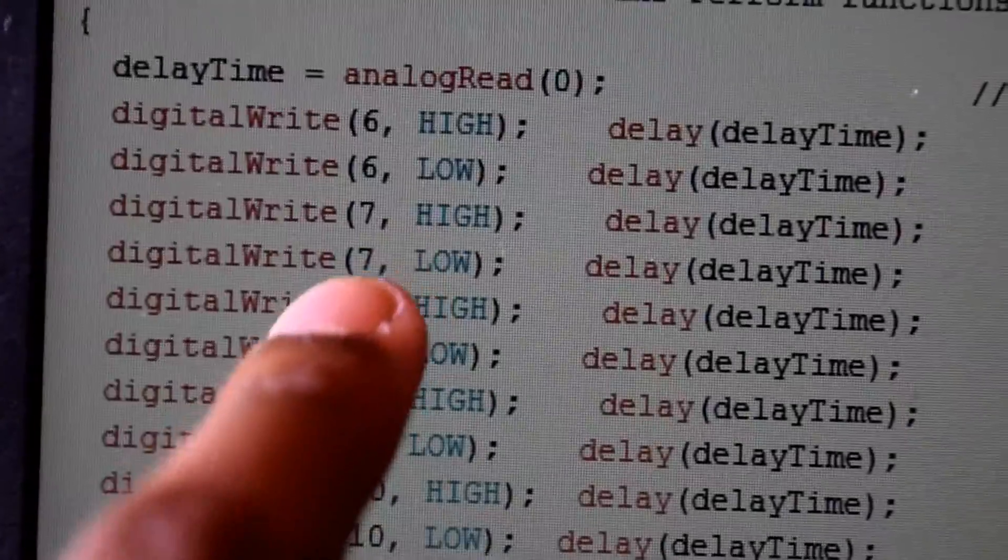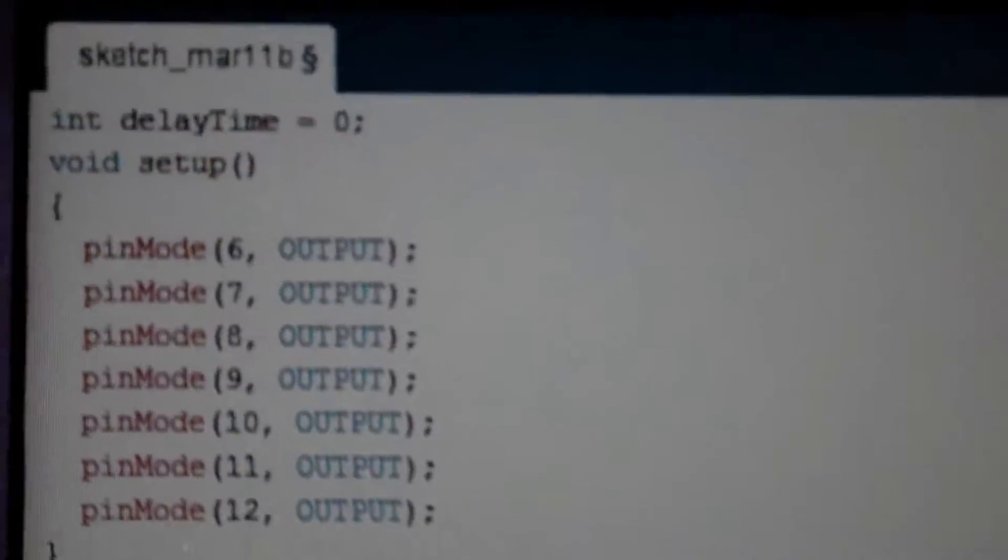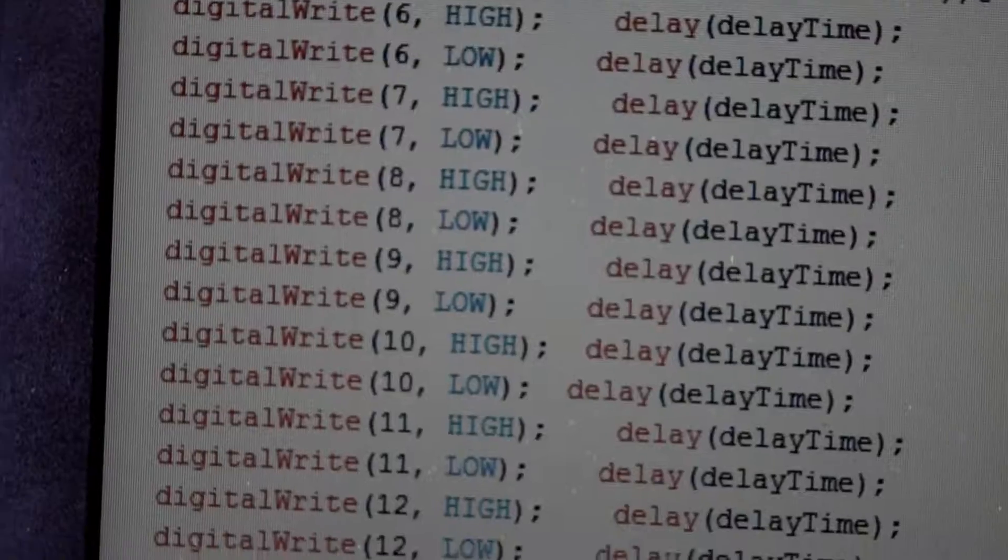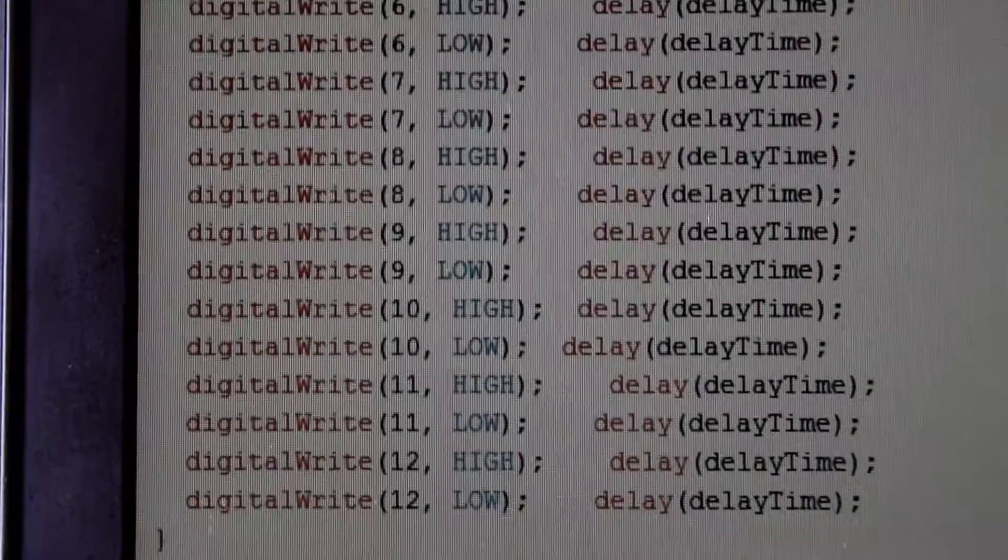Otherwise, first set high and low - six high, six low, high, low, high, like this. This is how the coding in Arduino works: one time high, one time low. Then comes the step to connect the LEDs.